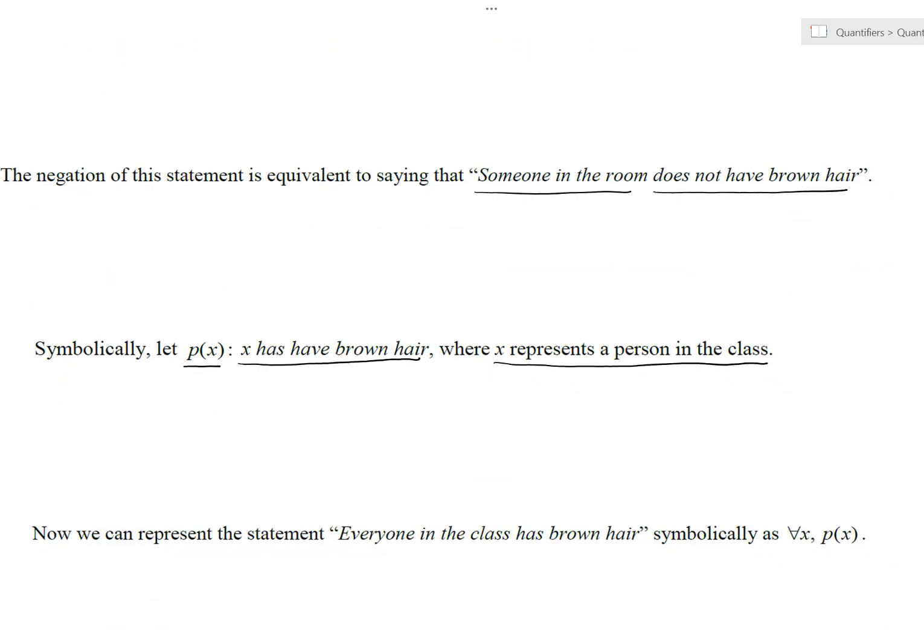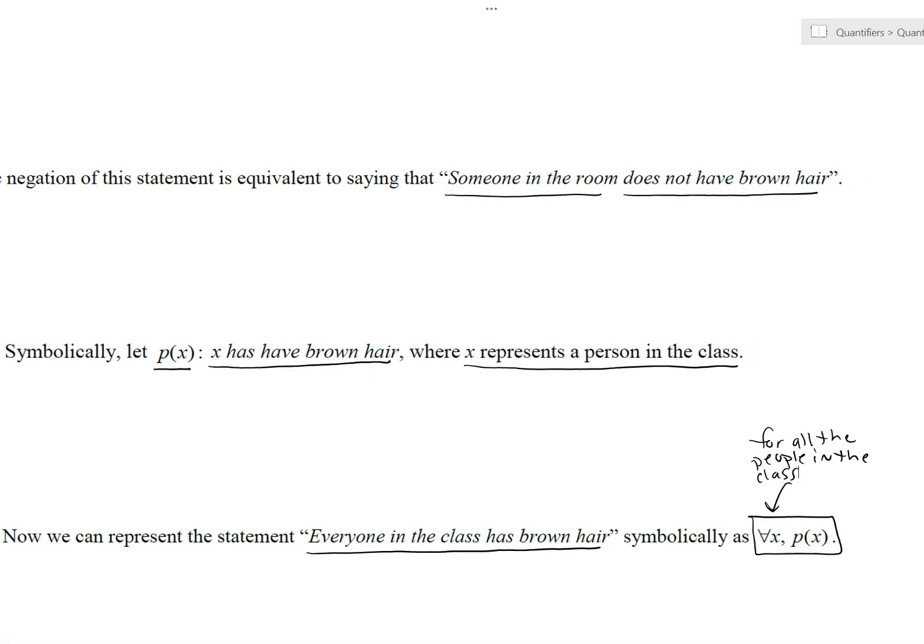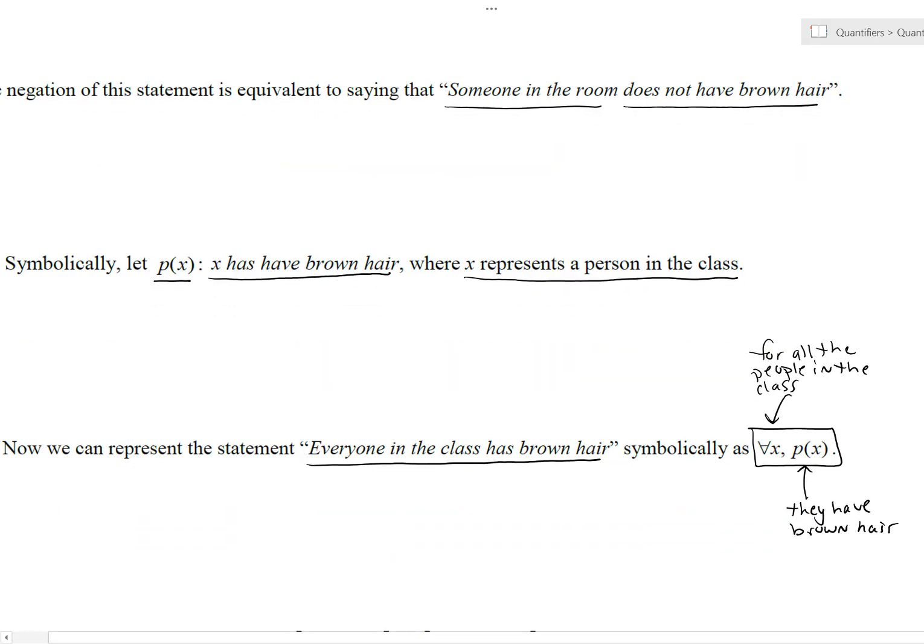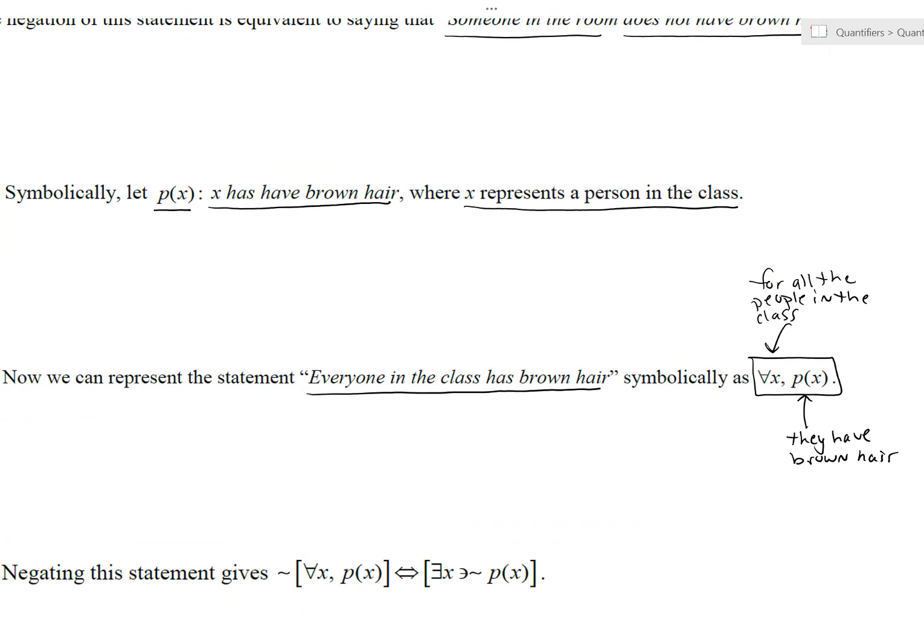We could represent this through a function P of X. But you could use whatever symbol you want. And we could let X has brown hair. So you say, here's a person X, wherever they are, they either have brown hair or they don't. And P of X is either true or false. So then we could combine this now and I would say, okay, P of X is the statement X has brown hair. And then we could turn that into the statement that we were first talking about. Everyone in the class has brown hair as the quantified statement boxed in on the bottom right. For all X, P of X. What's that saying? For all the people in the class, they have brown hair.